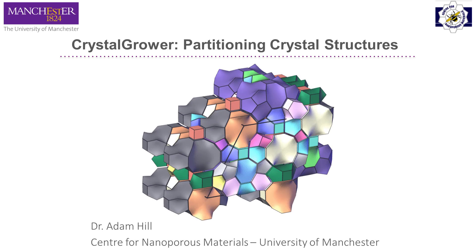The first step to running any crystal grower simulation is to partition your structure into units of growth. There are two options: a tile-based system based around natural tiling, or you can partition your structure using the simplified net, which we call net structures. Where did this partitioning system come from, and how do you know when to use net crystals versus tile crystals?